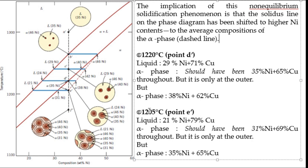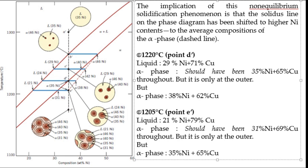As we move from center to outer edges, nickel content becomes lesser and copper becomes more. The center is highly rich in nickel and the outer periphery is rich in copper. Generally, in an isomorphous alloy, the center is rich in the high melting point element and the boundary is rich in the low melting point element. At D', the alpha phase ultimately has 38% nickel and 62% copper instead of 35%.